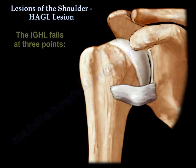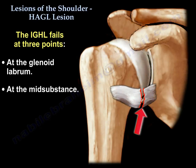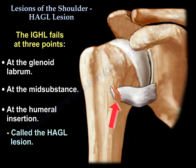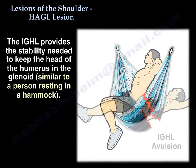The inferior glenohumeral ligament fails at three parts: the glenoid labrum, the mid-substance, or at its humeral insertion — and that's called the HAGL lesion. The inferior glenohumeral ligament provides the stability needed to keep the head of the humerus in the glenoid.